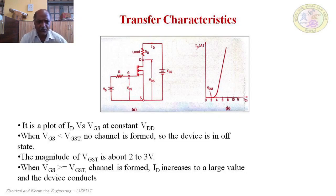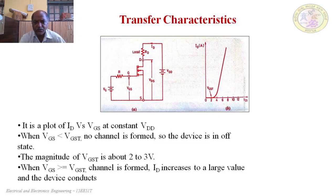Practically, it is found that the threshold voltage VT will be around 2 to 3V. Until the gate-to-source voltage reaches 2 to 3V, there will not be current through the channel. If the gate-to-source voltage increases above that value, then current starts flowing through the device.